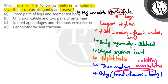Now let's talk about the digestive system in Arthropoda. It is a complete digestive system, meaning there are two openings present — the mouth and the anus are separate. Food does not enter and exit from the same opening.